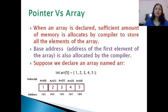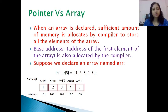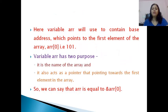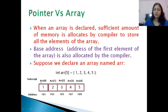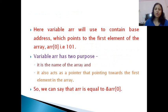The subscript of the array starts from 0. Value 1 is stored at address 101, 2 at address 103, 3 at 105, 4 at 107, and 5 at 109. The variable ARR contains the base address, which points to the first element of the array, ARR[0], that is address 101.